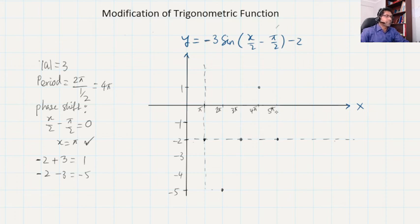But it is starting from π, that's why it's ending at 5π. If it's starting from 0, then it will finish at 4π. And now we just need to connect the points. So if you just connect the points, let's say we are plotting the graph here.